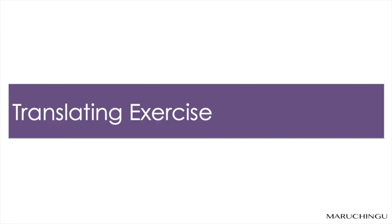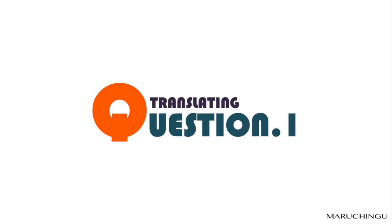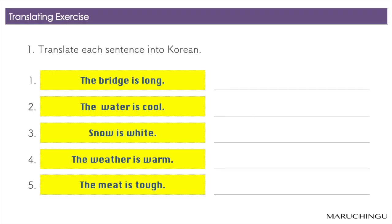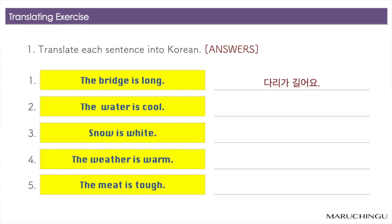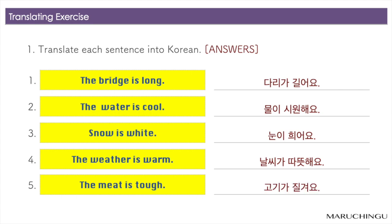Translating exercise. Question 1: Translate each sentence into Korean. 1번. 다리가 길어요. 2번. 물이 시원해요. 3번. 눈이 휘어요. 4번. 날씨가 따뜻해요. 5번. 고기가 질겨요.